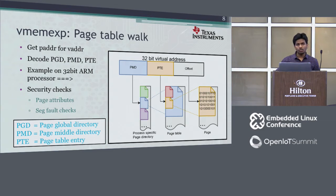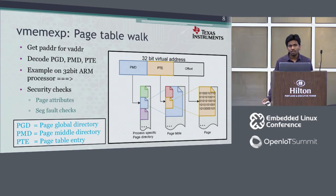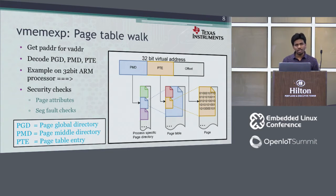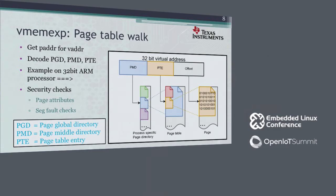Once the application gives the virtual address, all subsequent procedures are done by the kernel — the kernel gets the physical address by walking through the page table. This is just an example for 32-bit ARM; in the kernel, the APIs provided are generic enough that the same code works on different architectures with different-sized PTEs and PMDs.